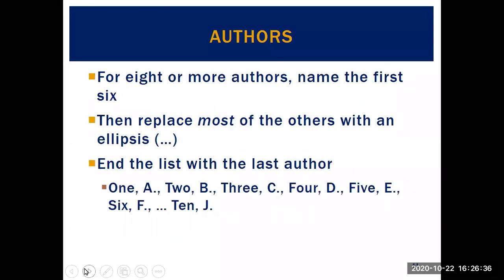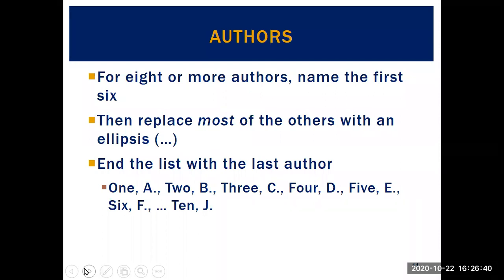For eight or more authors, name the first six, then replace most of the others with an ellipsis, and end with the last author. So you list authors one through six, then an ellipsis, and then jump to — for example — the tenth author.